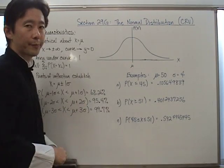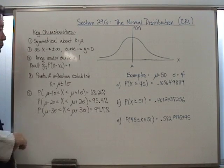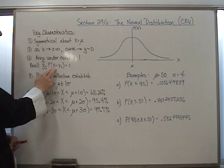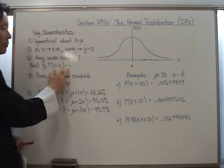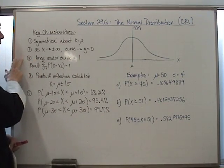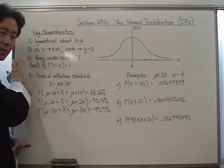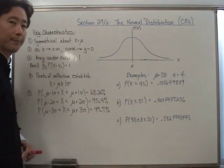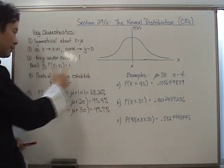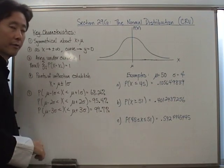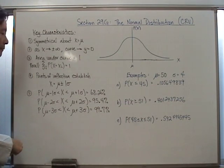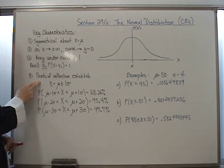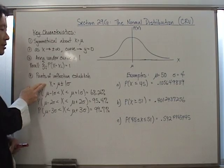The x-axis will be a horizontal asymptote of the curve. Number three: just as with discrete random variables where all probabilities sum to one, for the continuous case the area under this curve is equal to one. Also remember that the points of inflection of the curve establish where the first standard deviations are.